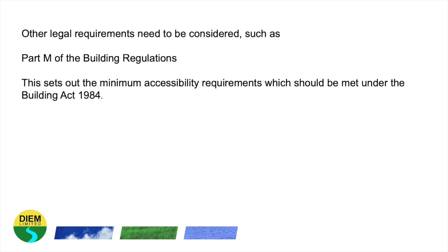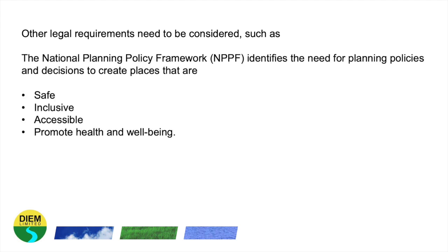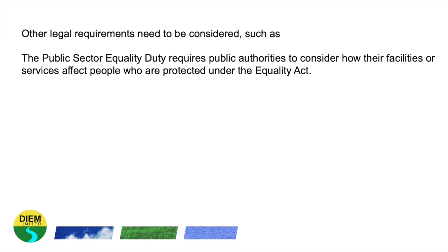There are other legal requirements in the UK that need to be considered, such as Part M of the Building Regulations, which sets out the minimum accessibility requirements that should be met under the Building Act 1984. The National Planning Policy Framework identifies the need for planning policies and decisions to create places that are safe, inclusive, accessible and promote health and well-being. The public sector equality duty requires that public authorities consider how their facilities or services affect people who are protected under the Equality Act.